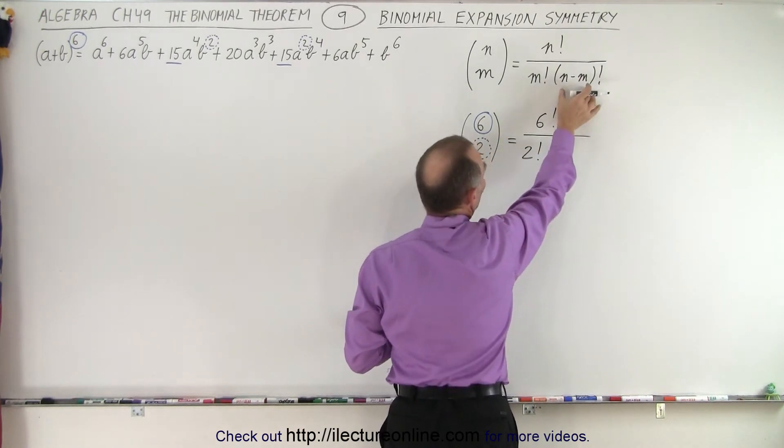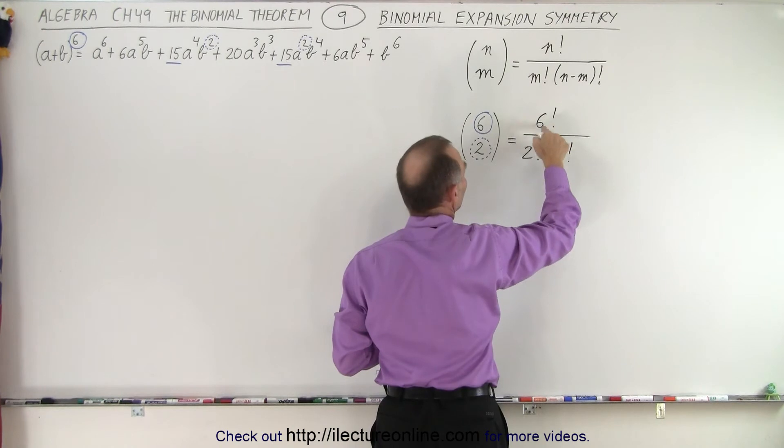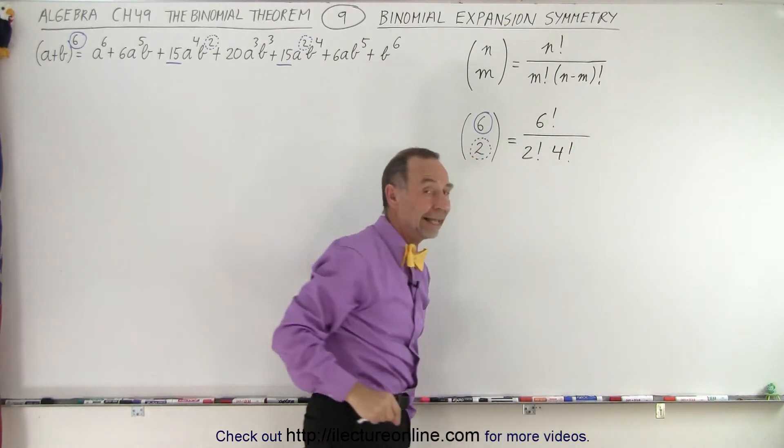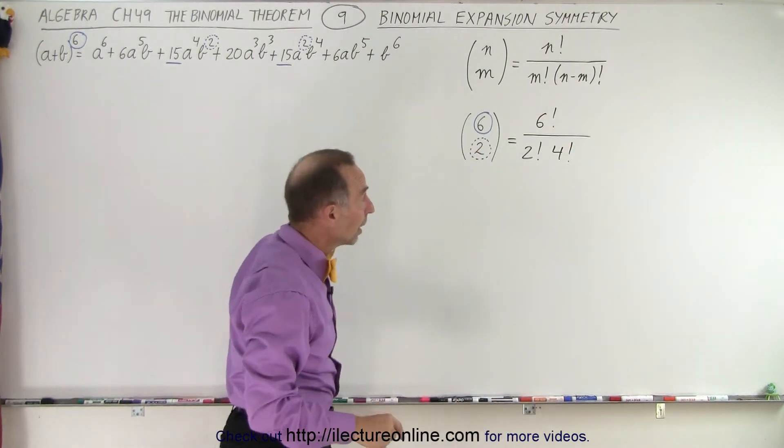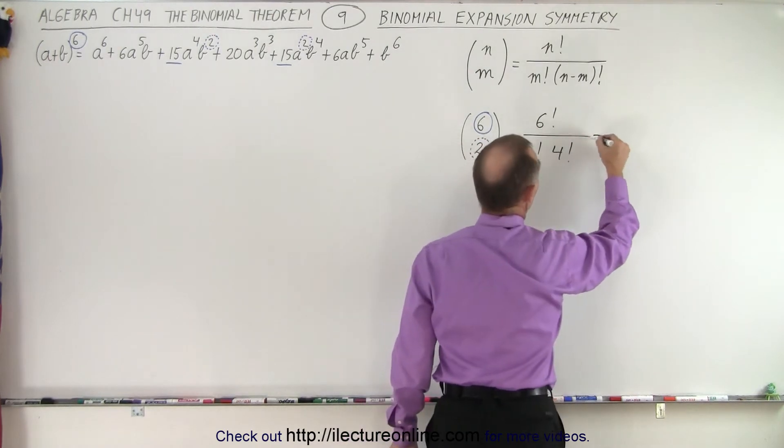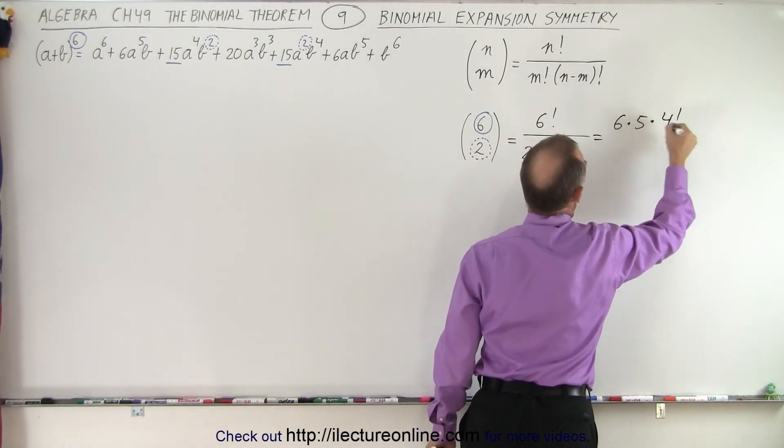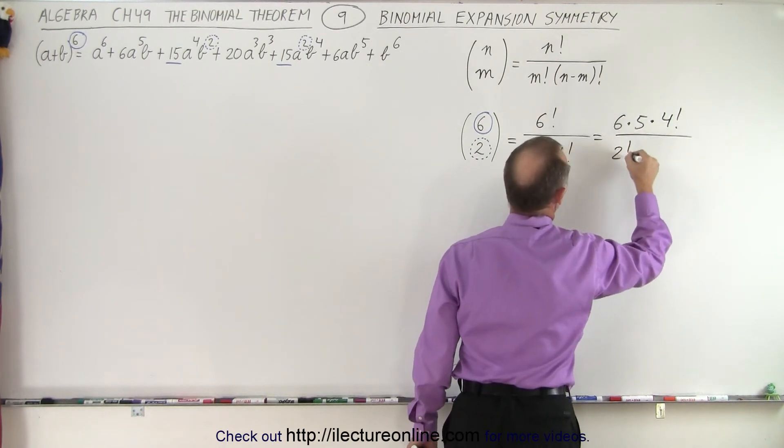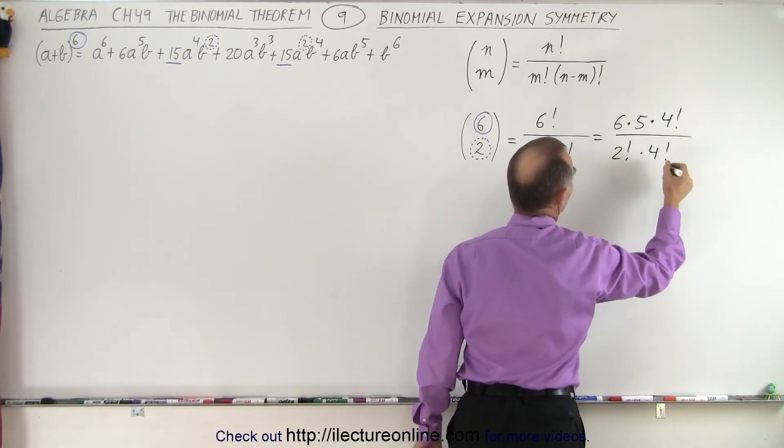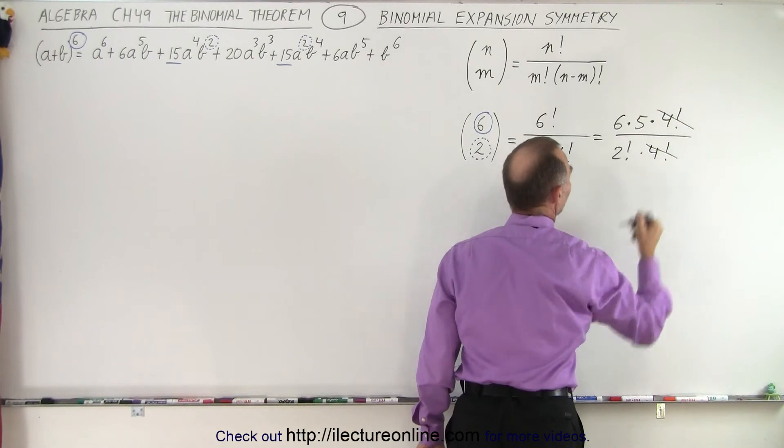So without even writing that, you could simply say 6 minus 2 equals 4 factorial, and that's what we need to work out. Now notice that 6 factorial can be written as 6 times 5 times 4 factorial divided by 2 factorial times 4 factorial. And then you see that the 4 factorial cancels out.